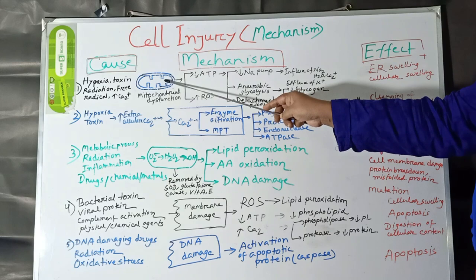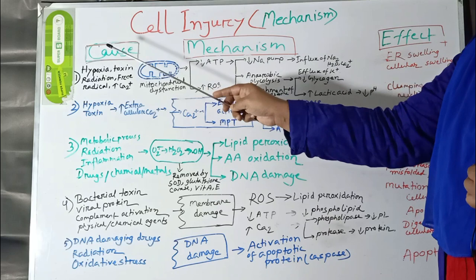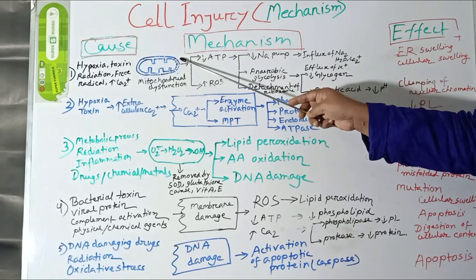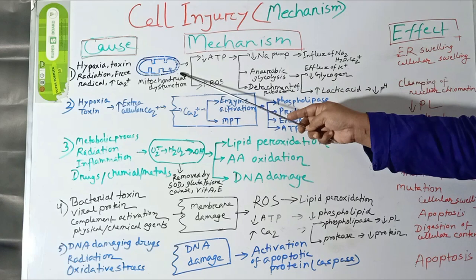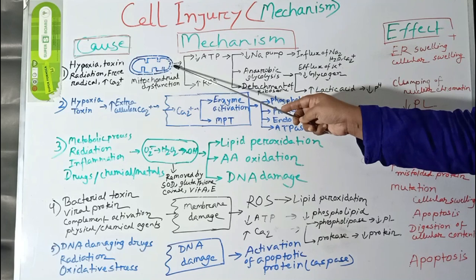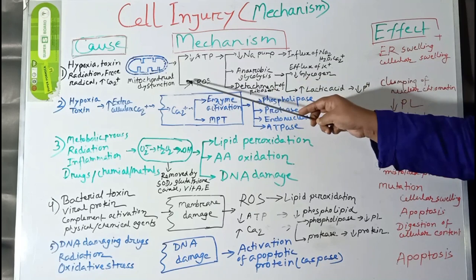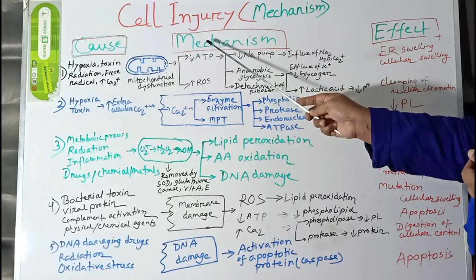Mitochondria is sensitive to virtually all types of injurious agents, including hypoxia, toxins, radiation, free radicals, as well as increased calcium levels. These agents cause opening of a high-conductance channel within the mitochondrial membrane, resulting in loss of mitochondrial membrane potential. This loss of mitochondrial membrane potential causes decreased oxidative phosphorylation and subsequently decreased ATP synthesis. Mitochondrial damage also causes production of reactive oxygen species.